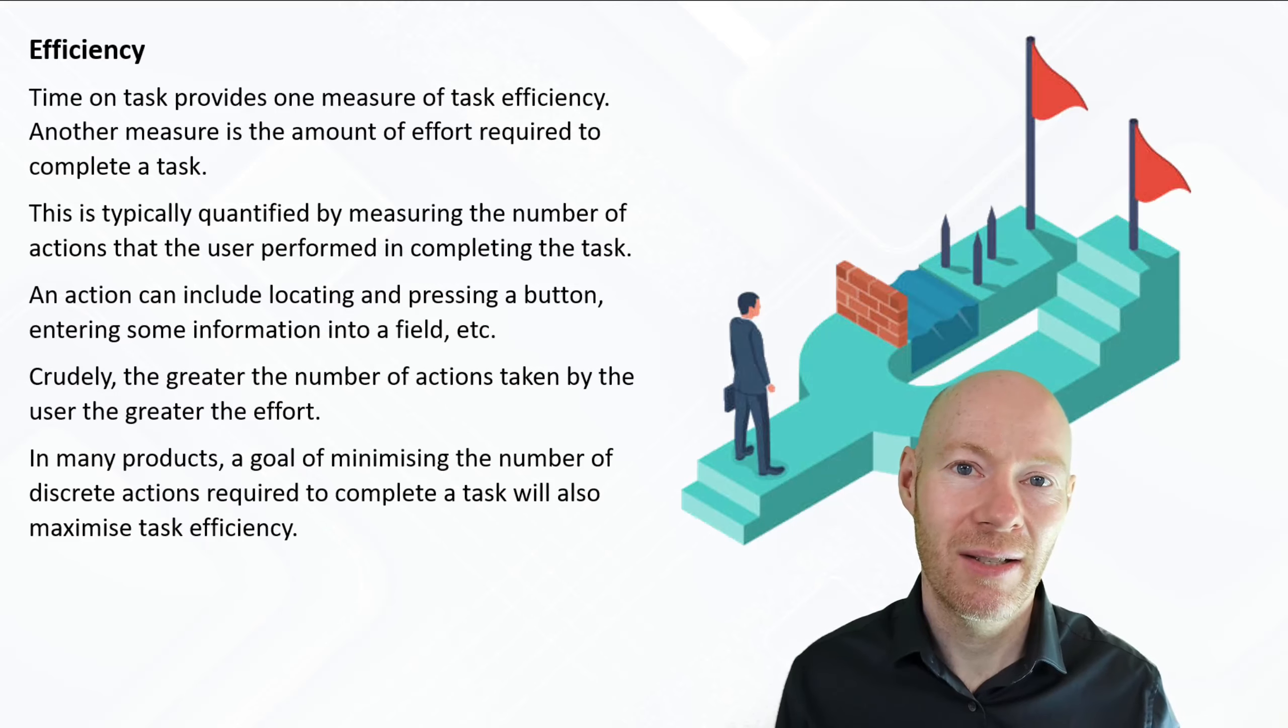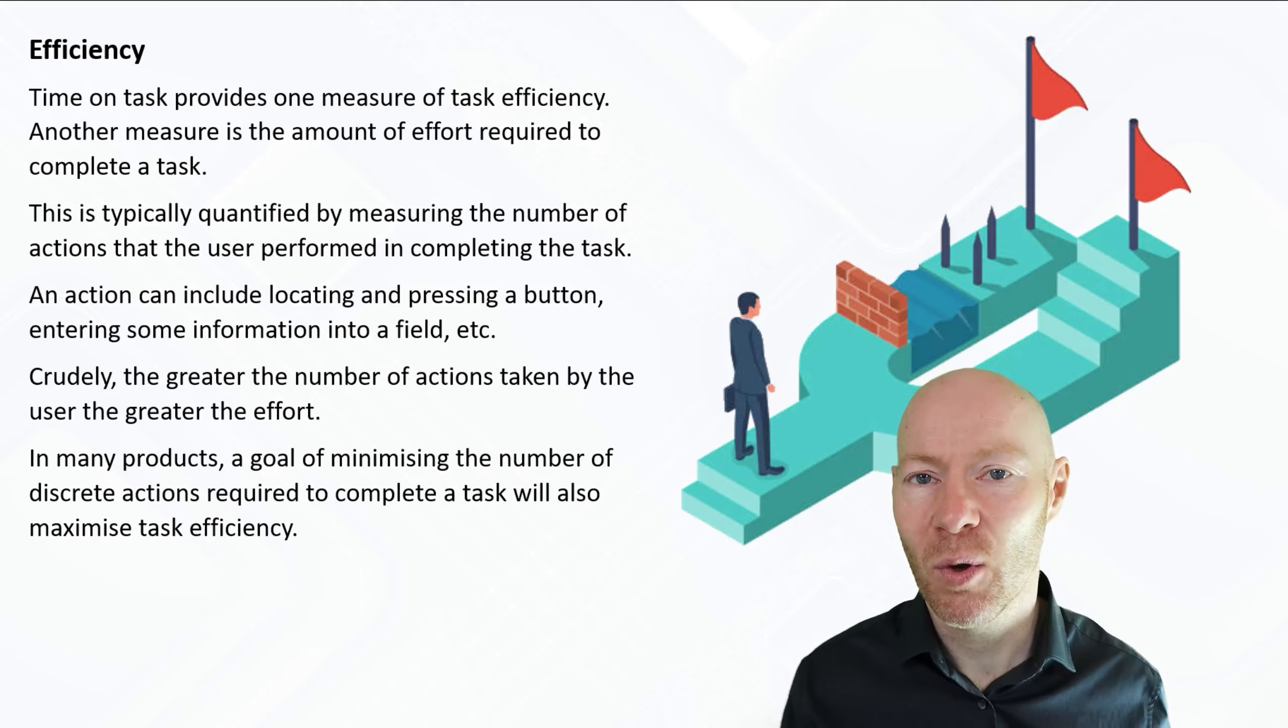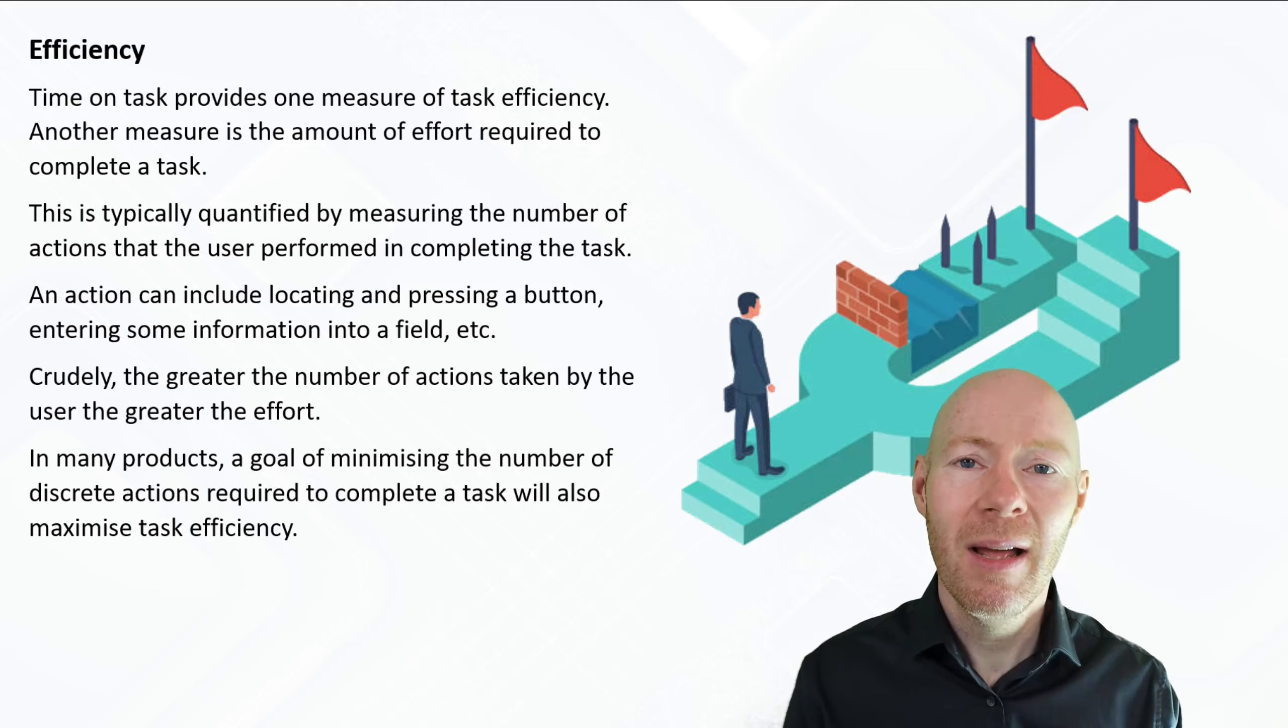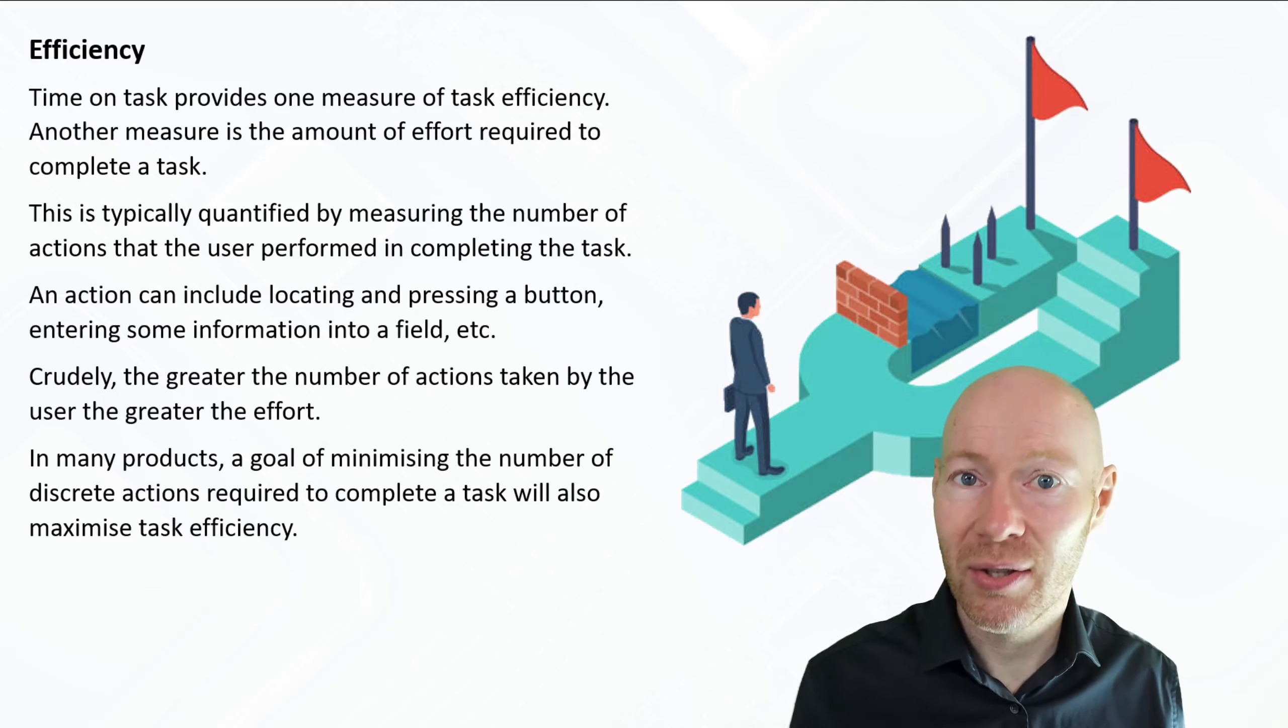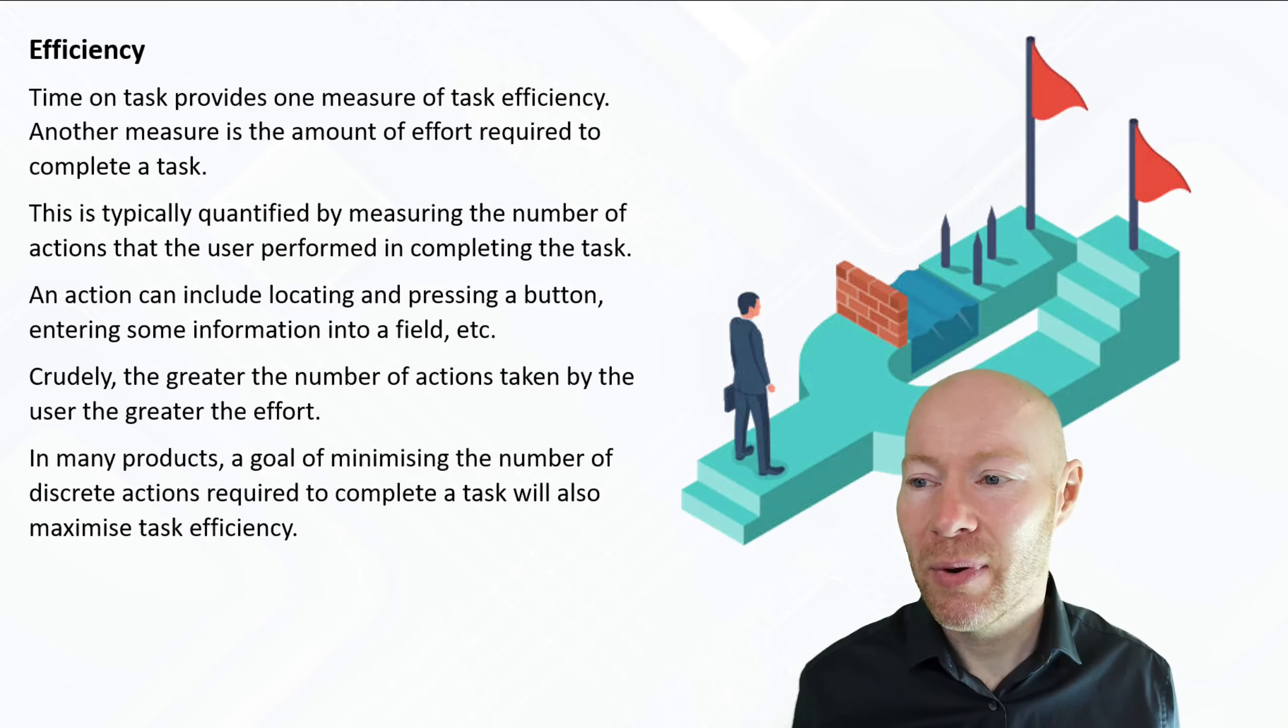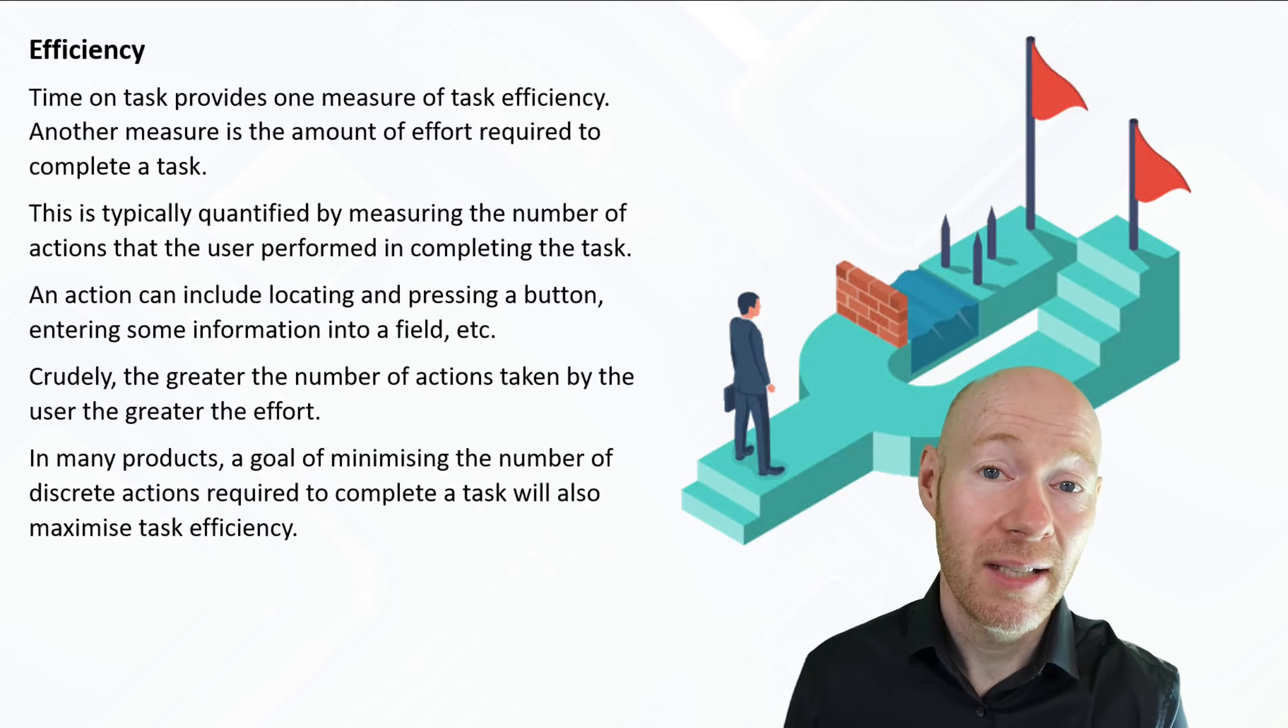And by reducing the number of actions, we can make the process more efficient. The fundamental assumption in this is that the cost of doing an individual action is comparable. So we're not taking three very quick and easy actions and replacing them with one really complex and difficult to do action. That would be the wrong way of going about this. So if we assume that all actions are roughly comparable, then we can count them and that does give us a way of measuring or tracking our efficiency. So in many products, if we minimize the number of actions, meaningful, equally weighted actions that the user has to take, that does give us a way of improving the overall task efficiency.